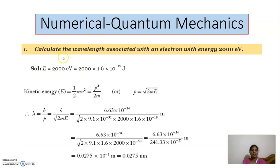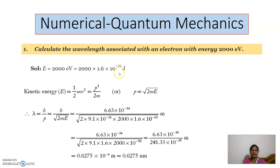The first problem is: calculate the wavelength associated with an electron with energy 2000 electron volt. The given data is energy is 2000 electron volt. We can convert this electron volt into joules by multiplying by 1.6 into 10 power minus 19.